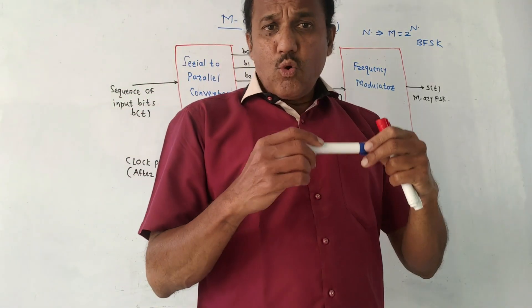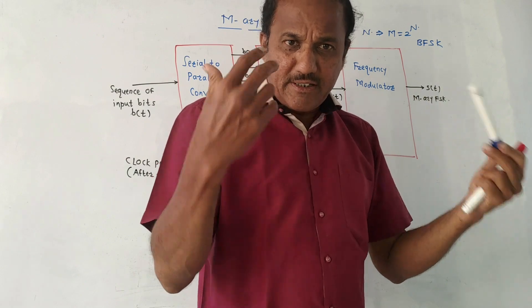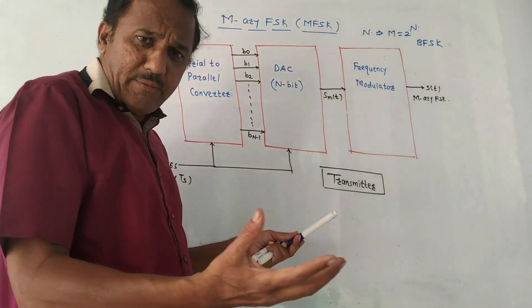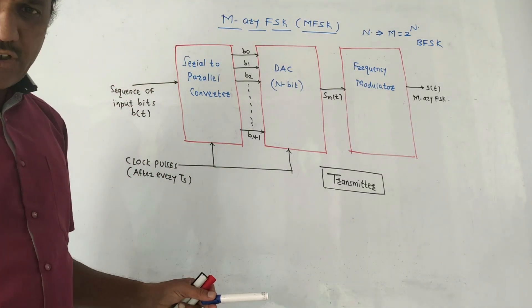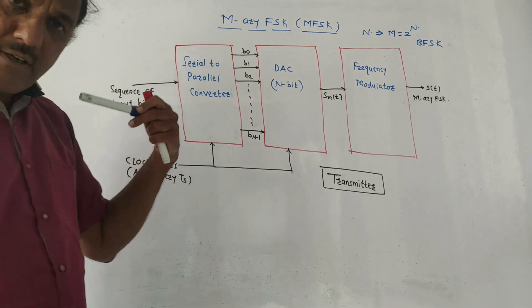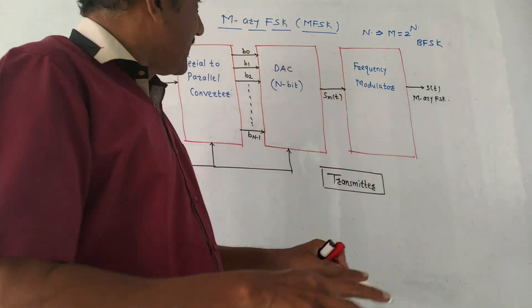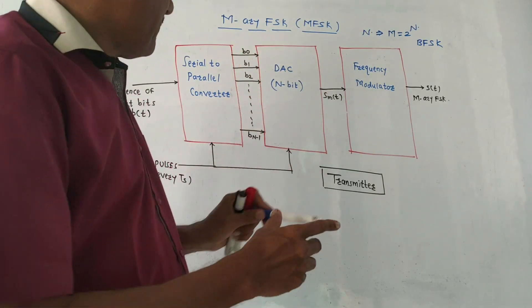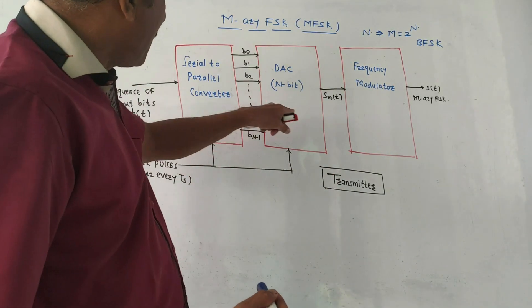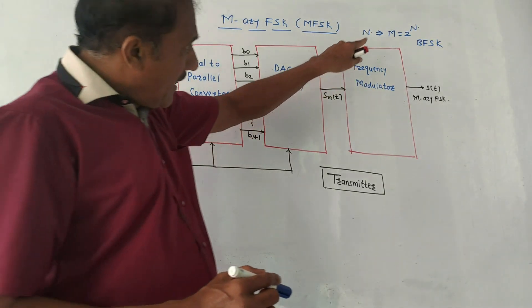From the example point of view, the question may be like this: What is M-ary FSK and explain its transmitter and receiver section? Or a separate question can be expected like: Draw the block diagram of transmitter section of M-ary FSK, or draw the block diagram of receiver section of M-ary FSK. Presently we are talking about the transmitter section of M-ary FSK.